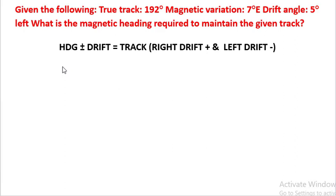To solve the problem, we will use the formula heading plus minus drift equals track. In case it is right drift, the sign would be plus. In case it is left drift, the sign would be minus.